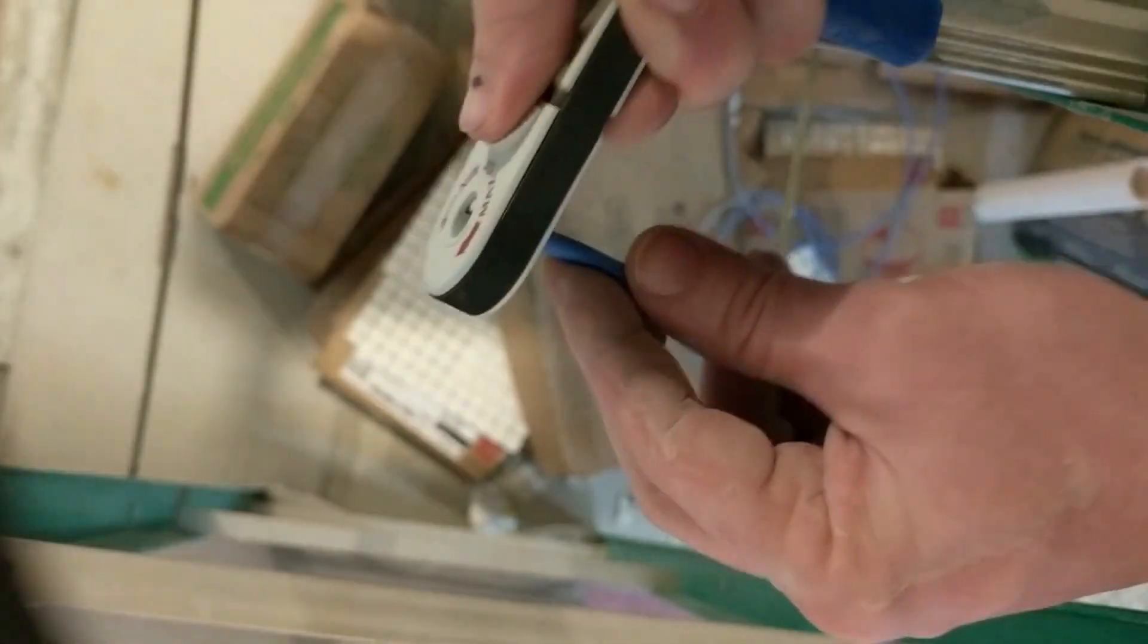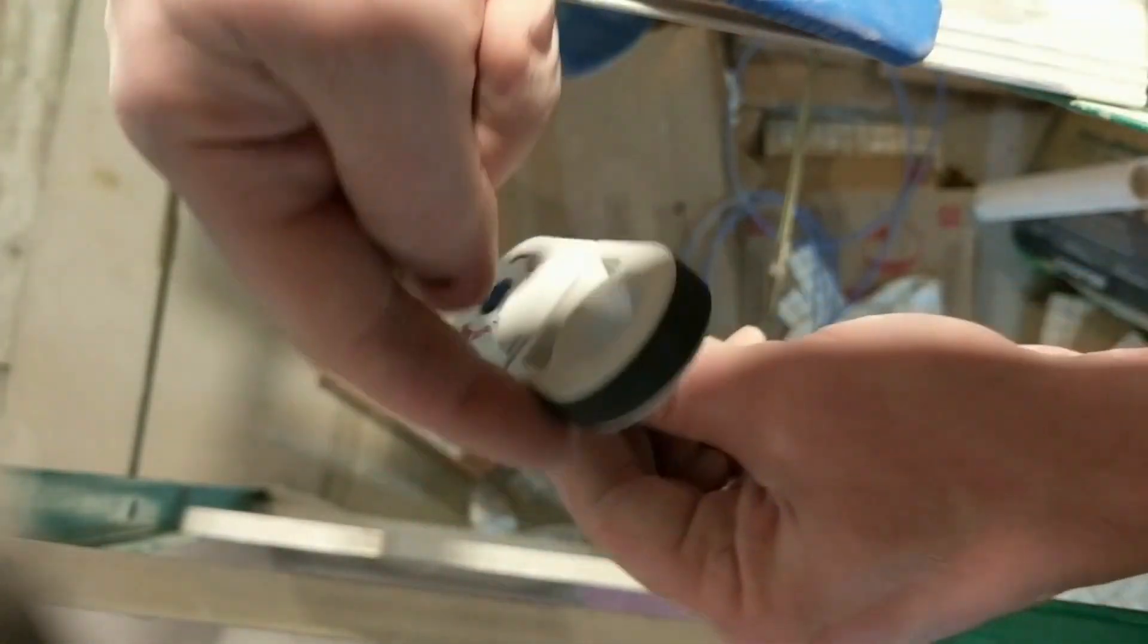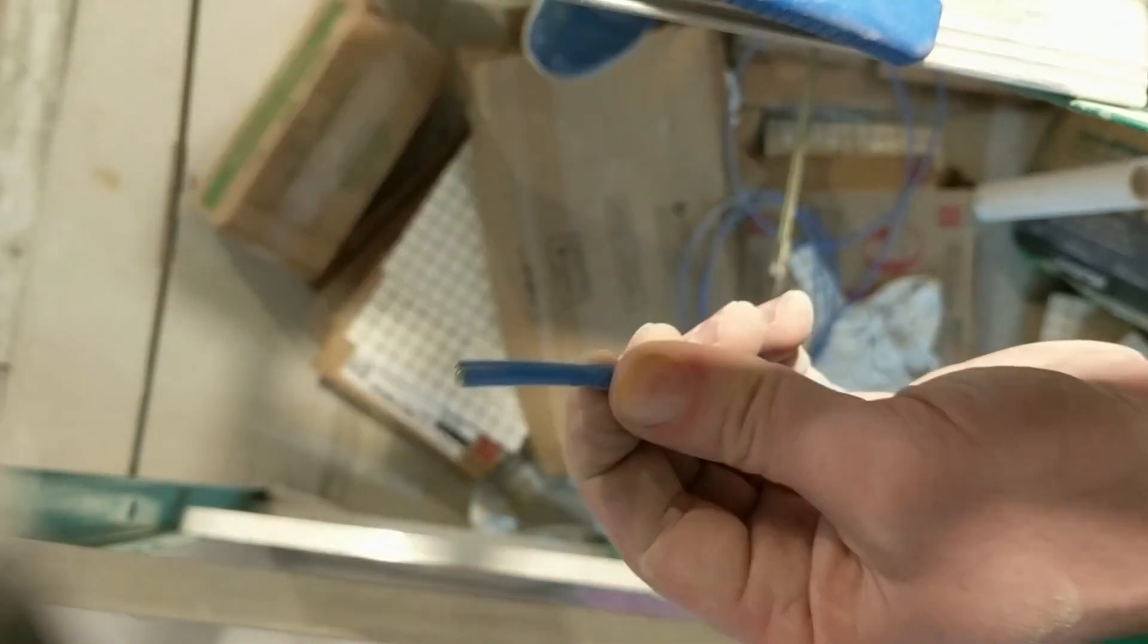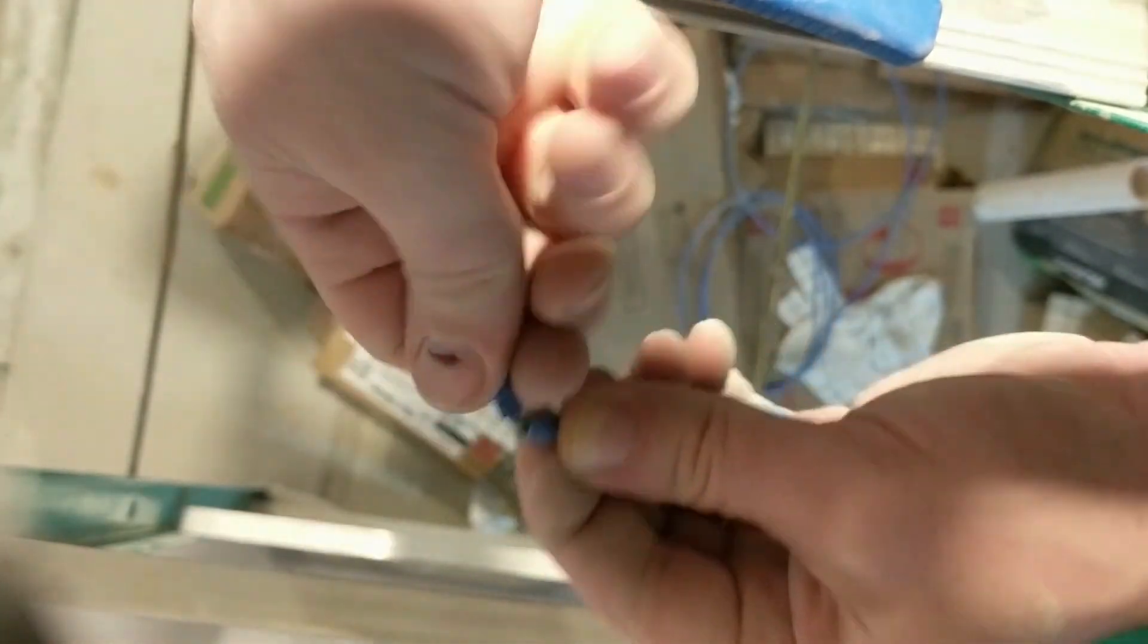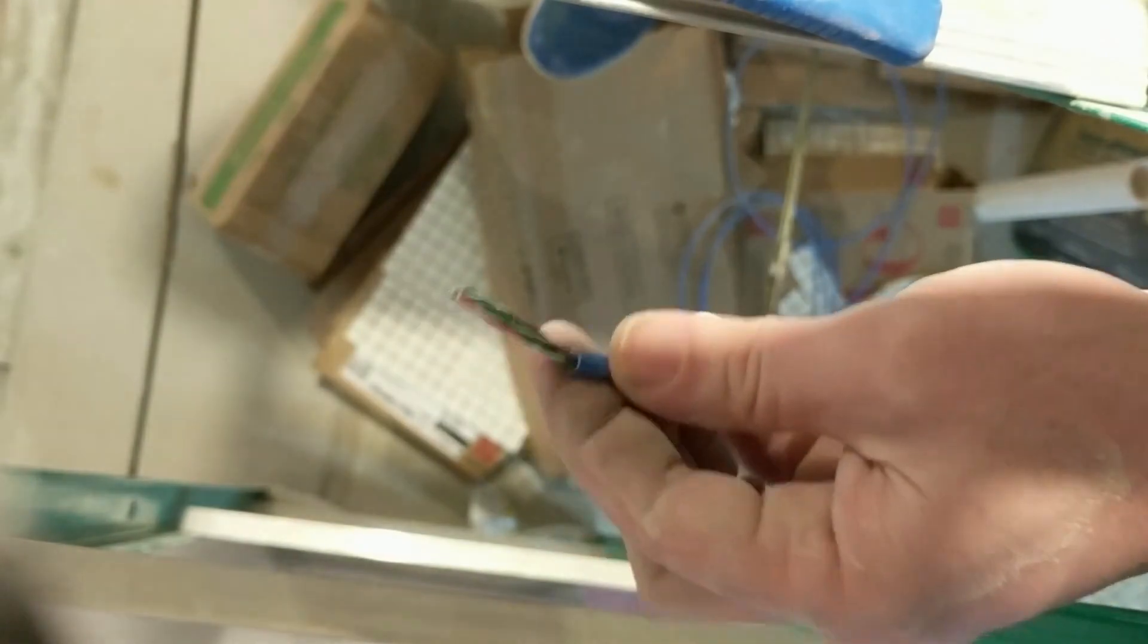This tool here is a stripper tool. I call it a cyclops stripper. You just put the wire in, do one rotation around, and it cuts the sheathing or the insulation of this cable. And I pull that right off.